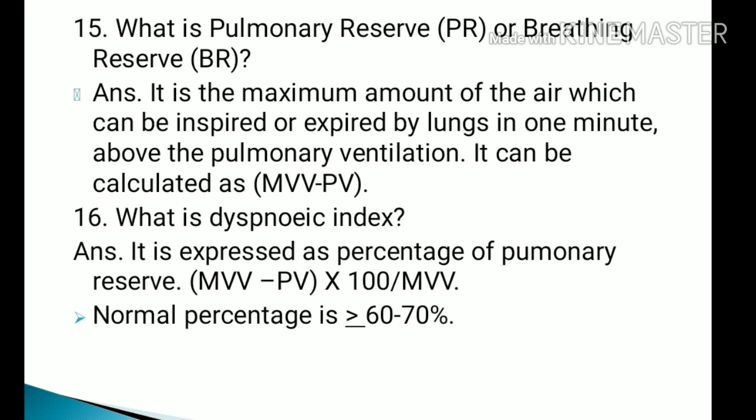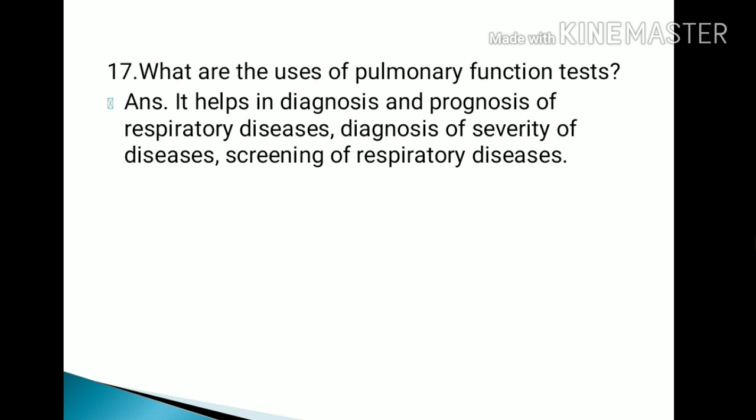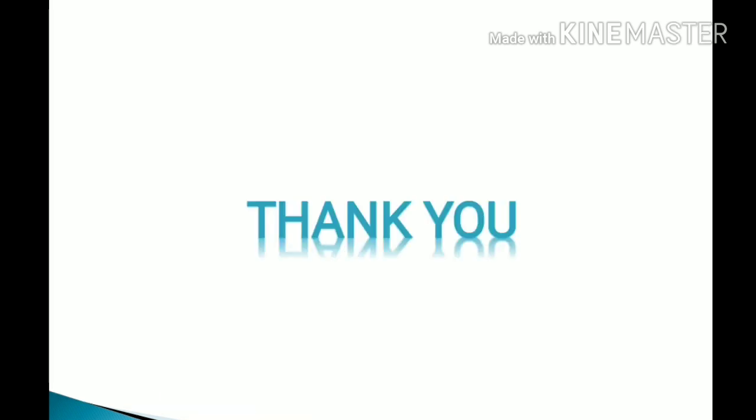What is the dyspneic index? It is expressed as a percentage: pulmonary reserve divided by maximum voluntary ventilation, multiplied by 100. The normal percentage is more than or equal to 60 to 70%. What are the uses of pulmonary function test? It helps in diagnosis and prognosis of respiratory diseases, diagnosis of severity of diseases, and screening of respiratory diseases.